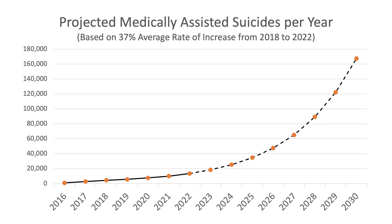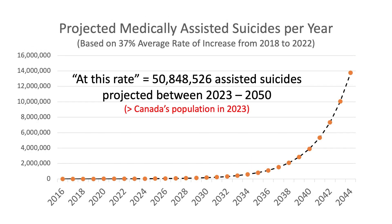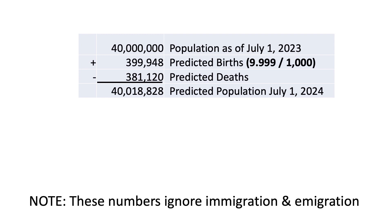At an annual 37% growth rate, that means we should expect just over 167,000 assisted suicides in 2030. And if that 37% growth rate continues beyond 2030, I am confident it will come to an end no later than 2044, because at this rate, Canada would be uninhabited by then. But getting back to our original question, how many deaths do I expect from July 1st, 2023 to June 30th, 2024?